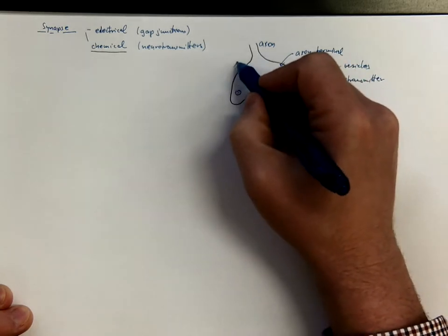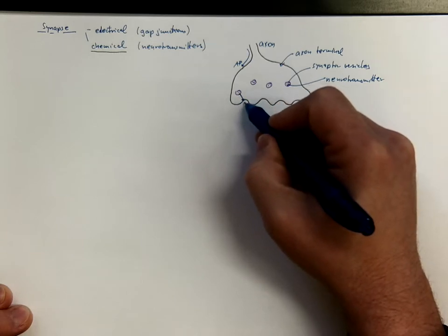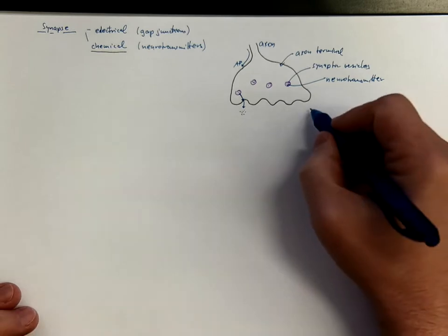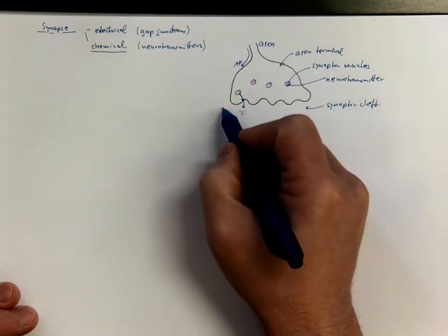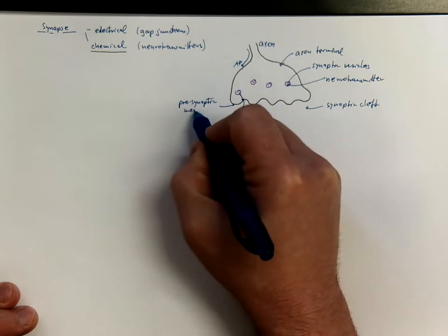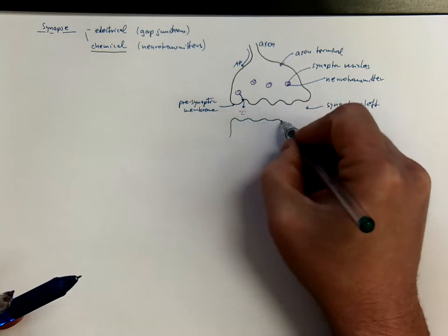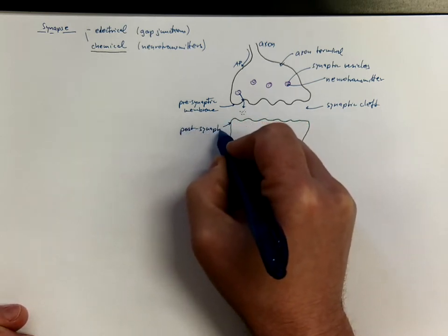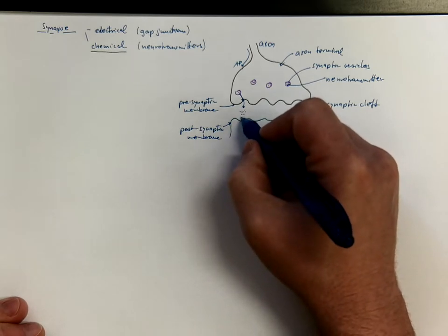When the action potential reaches this axon terminal, the neurotransmitters will be released outside into a space called the synaptic cleft. The membrane on the sending side is called the presynaptic membrane, while the membrane of the other neuron is called the post-synaptic membrane, and it contains receptors.